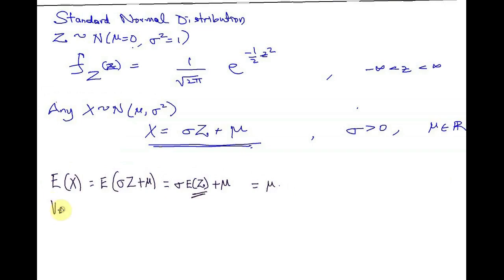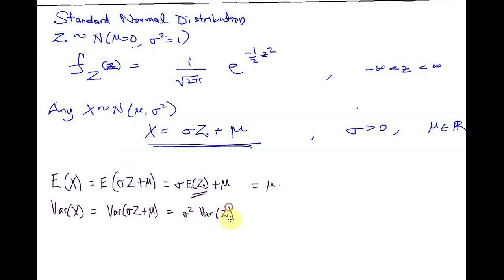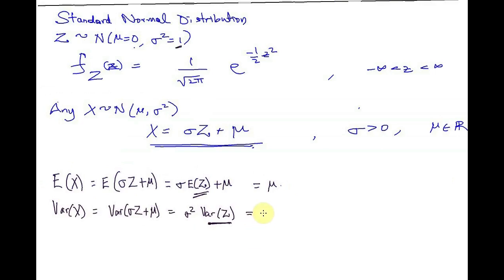The variance of X is equal to the variance of sigma Z plus mu, which is equal to sigma squared times the variance of Z. Since mu is constant, it has zero variance. The variance of Z equals 1, therefore the variance of X is sigma squared.